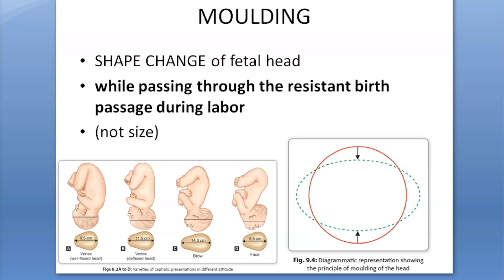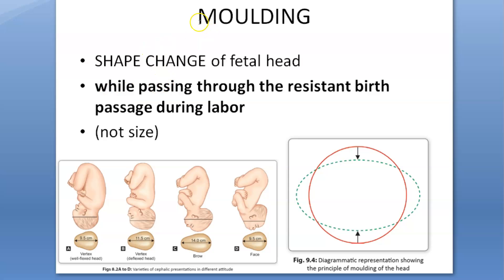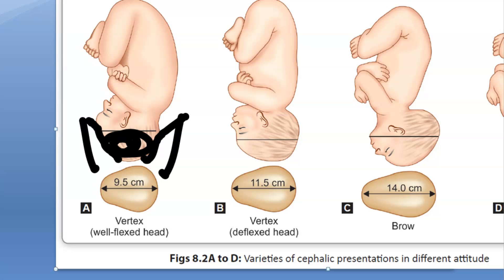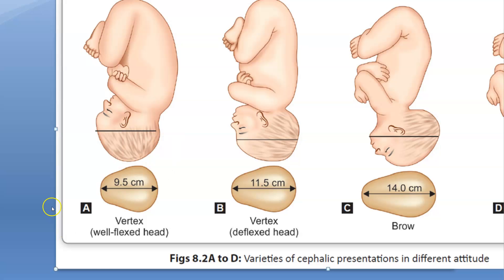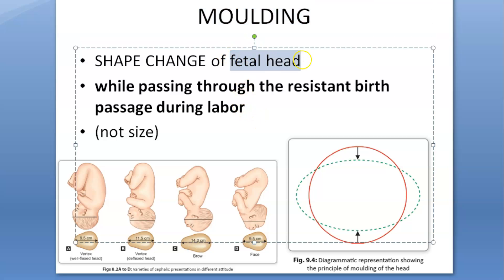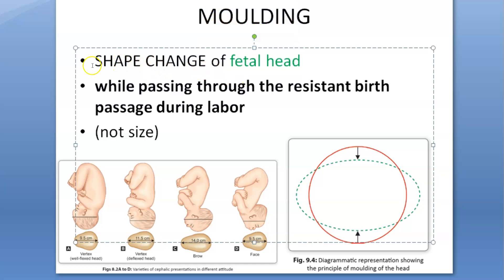In this video, let us understand what molding is. We are talking about obstetrics - specifically the fetal head. The fetal head has to come out of the maternal pelvis, and it will not have so much space. It has to squeeze through this space, so it undergoes something called molding. The fetal head undergoes molding, and what changes is the shape of the head.